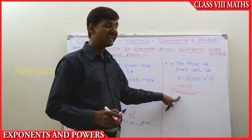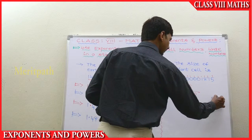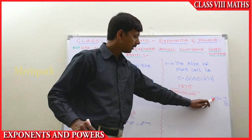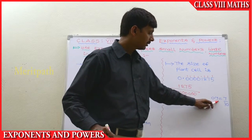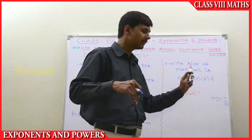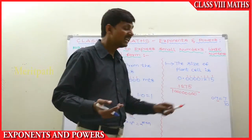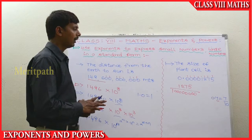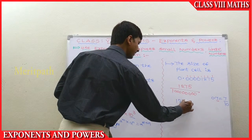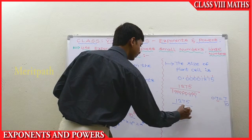For example, take 0.7, which equals 7 by 10 because there is 1 decimal place after the point. Similarly, here we have 8 decimal places, so we write 8 zeros in the denominator. So we get 1275 divided by 10 to the power of 8.